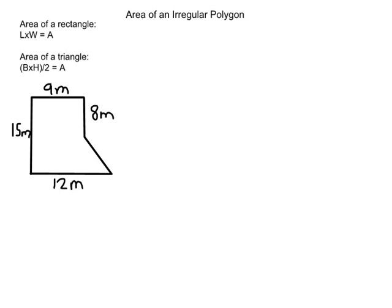Welcome to finding the area of an irregular polygon. We are given a polygon that is neither a rectangle nor a triangle. If it were, we'd be able to find the area very simply. The area of a rectangle is length times width, and the area of a triangle is base times height divided by 2. We're going to need both of these formulas to calculate the area of this polygon, which is not a rectangle nor a triangle.